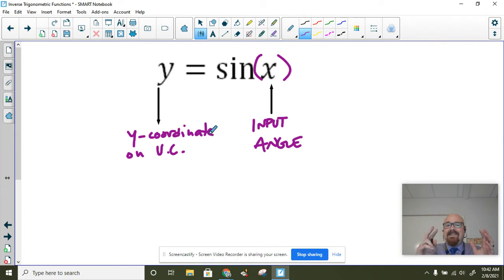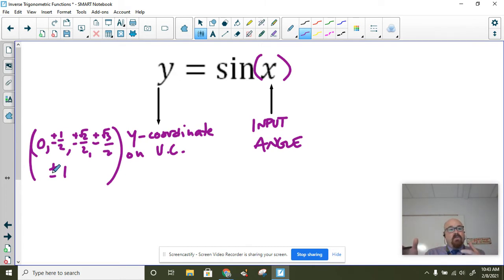There are limitations to using this as the tool for doing our trigonometry. If you look around the unit circle, the y-coordinates that we see are zero, plus or minus one-half, plus or minus radical two over two, plus or minus radical three over two, and plus or minus one. These are the only y-coordinates that we see on the unit circle.